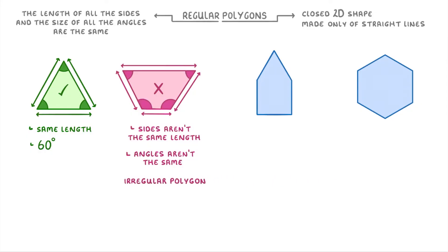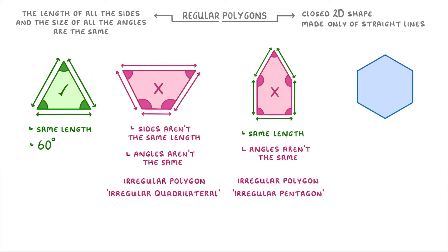So instead we could call it an irregular polygon, or because it has four sides, which makes it a quadrilateral, be more specific we could call it an irregular quadrilateral. Then this third shape, which is a pentagon because it has five sides, also wouldn't count as a regular polygon because although its sides are all the same length, its angles aren't all the same size. So it would count as an irregular polygon or an irregular pentagon to be more precise.